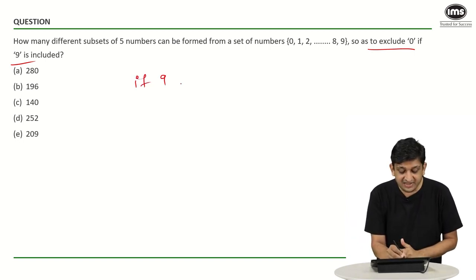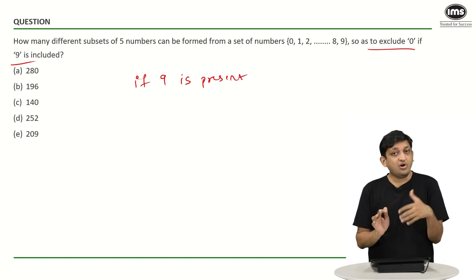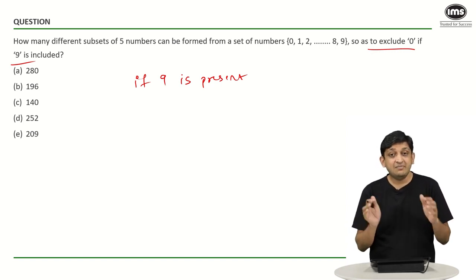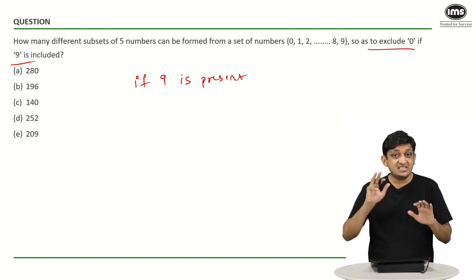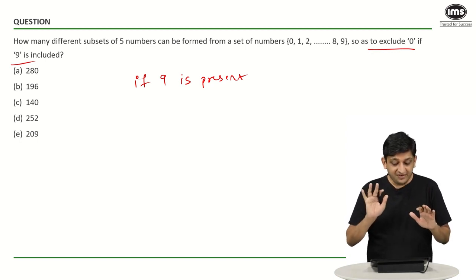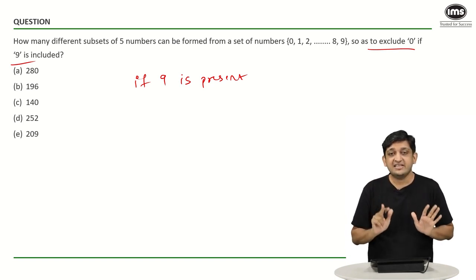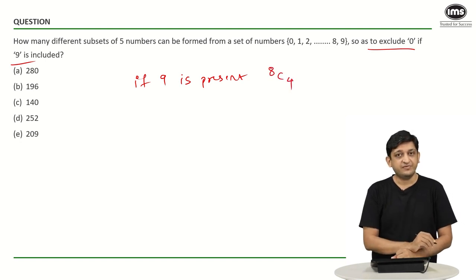The first case is if 9 is present. Then I have a choice to select 4 more numbers from the remaining 8 numbers. Because if you have 1, 2, 3, 4, 5, 6, 7, 8, 9 and 0 — if 9 is selected, 0 cannot be selected, so 8 numbers are left. Out of 8, we need to select 4 numbers, which can be done in 8C4 ways.